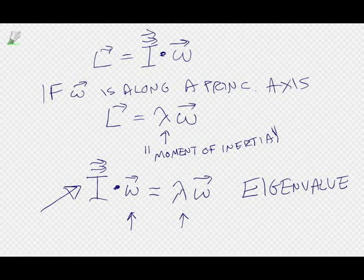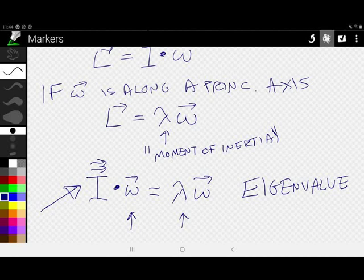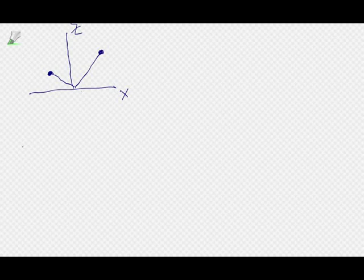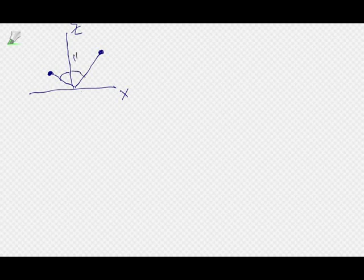Let's do an example to see how you figure this out. I'm going to have the x-axis and the z-axis, and two masses which for now I'll make identical. They're connected by extremely lightweight rods. I'm going to make both angles 45 degrees — or pi over four in radians. I'll call this length L and this length L over two. Both particles have mass M.